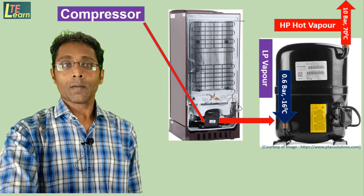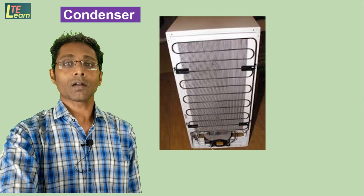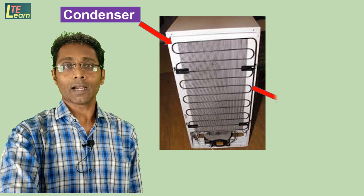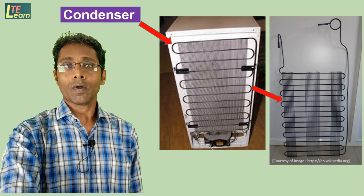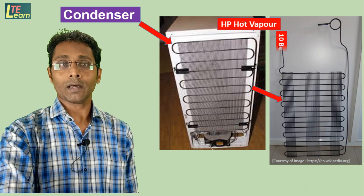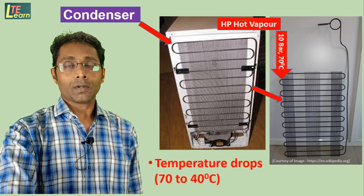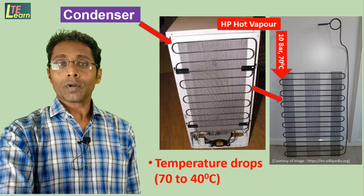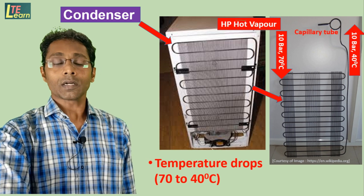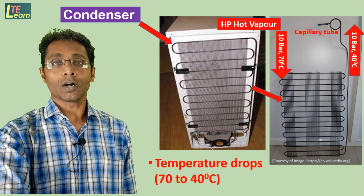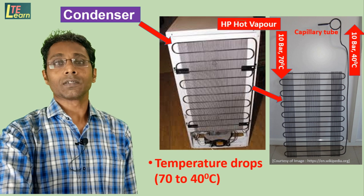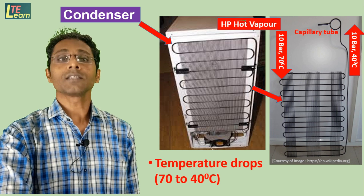For that, the refrigerant passes to the next component called the condenser. Condenser coils are situated at the back side of the refrigerator. When this high-pressure vapor passes through the condenser coil, a temperature drop takes place and the vapor refrigerant is converted into liquid — condensation of the refrigerant takes place. This liquid refrigerant then passes to the capillary tube, and the cycle is repeated.